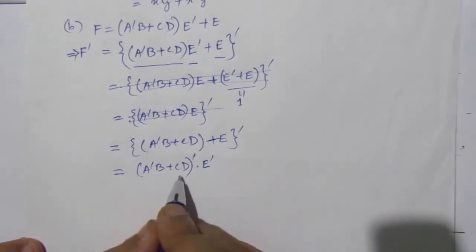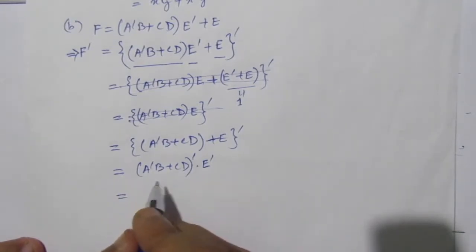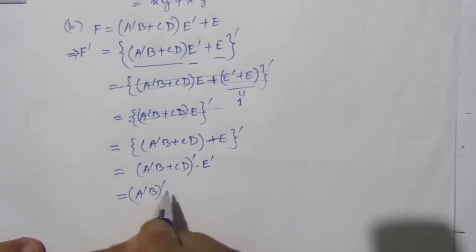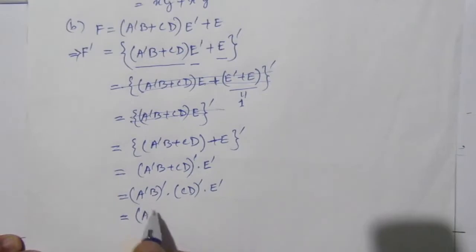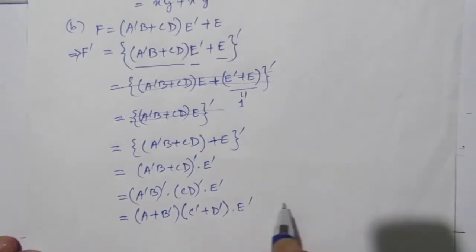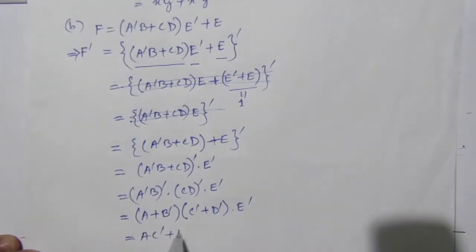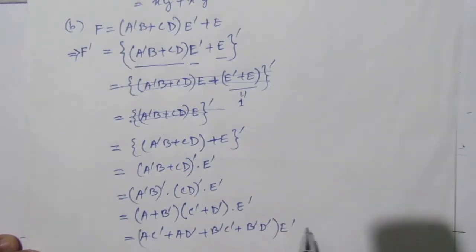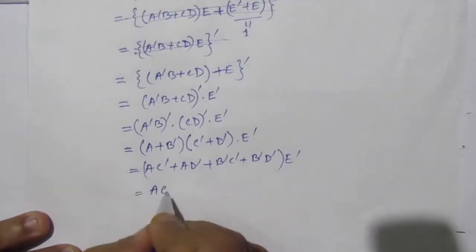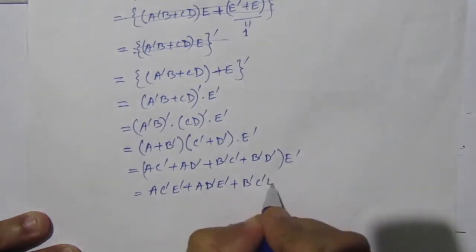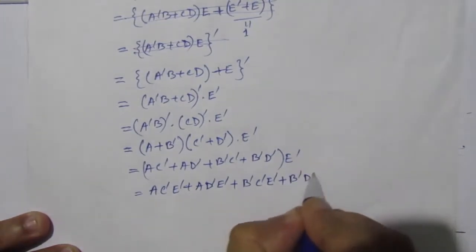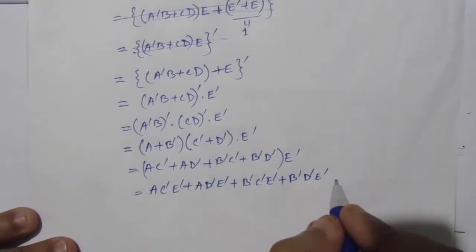Again using De Morgan's theorem for the term A̅B plus CD, whole bar, we get A̅B whole bar dotted with CD whole bar, dotted with E̅. Now A̅B whole bar gives A̅̅ plus B̅, which is A plus B̅. And CD whole bar gives C̅ plus D̅. So multiplying out: (A plus B̅)(C̅ plus D̅) into E̅, which expands to AC̅ plus AD̅ plus B̅C̅ plus B̅D̅, all multiplied by E̅. This is the final expression for F̅.